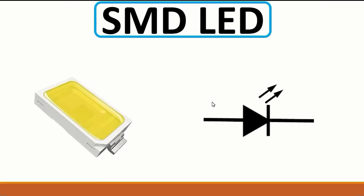Here we have an SMD LED. Remember, SMD means Surface Mounted Device, and the opposite of SMD is THT, or Through-Hole Technology. The LED is essentially a diode — you can see the symbol here, which is a diode with two arrows. You can test it using a multimeter using the same working principle as testing a normal diode. Always put the red probe on the anode.